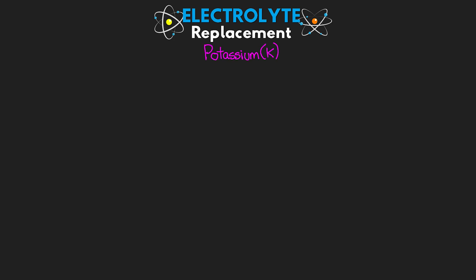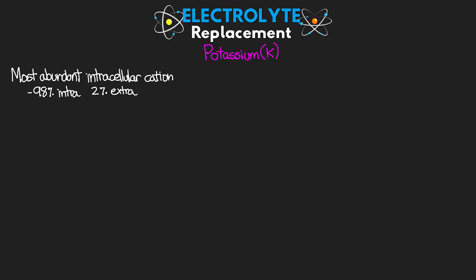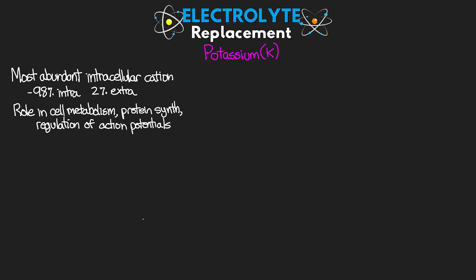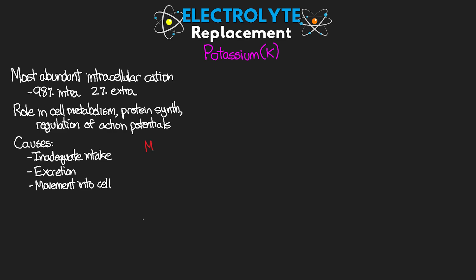Now let's talk about potassium, our most abundant intracellular cation — in fact, 98% of our potassium is intracellular, while only about 2% is extracellular. It plays an important role in cellular metabolism, protein synthesis, and the regulation of action potentials. We can see hypokalemia with inadequate intake, excessive excretion — think renal impairment, diuretics, GI losses — or increased movement into the cell from acid-base imbalance, insulin, or catecholamines. Hypokalemia can have significant effects on the excitability of electrical tissue, and increasing deficiencies can result in muscle weakness/paralysis, arrhythmias, and even asystole — making this a potentially life-threatening situation.